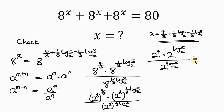There is a property of logarithm that says if the base and the base of the log are the same — for example, 2 to the log 5 base 2 — we simply take the 5. So this becomes 2 to the 4, which is 16, times 5, all over — and the same applies to the denominator — we take the 3.